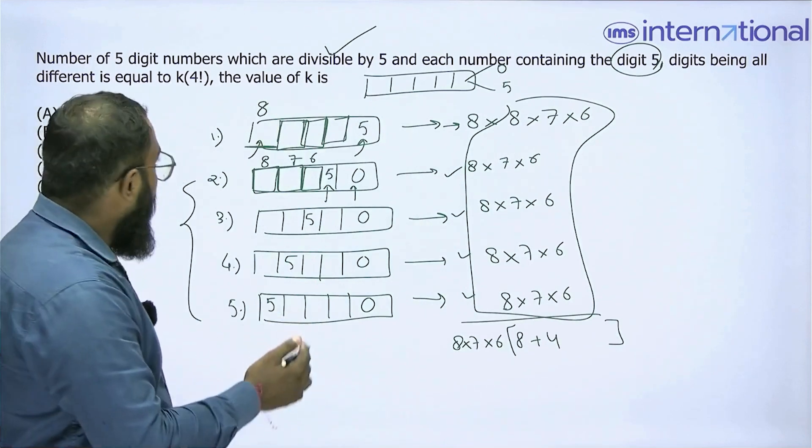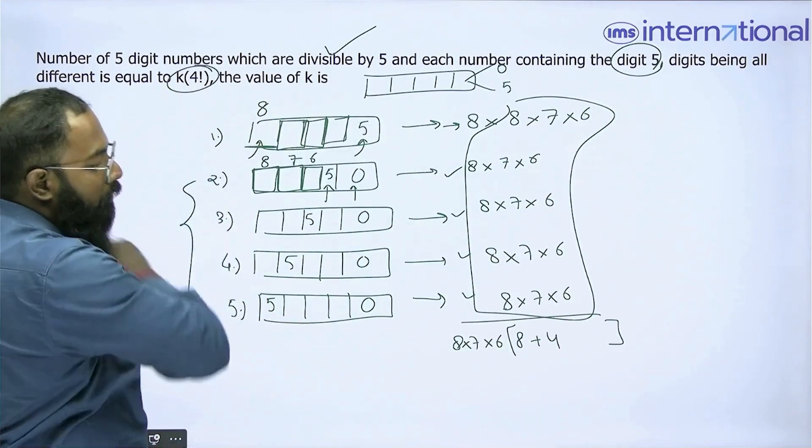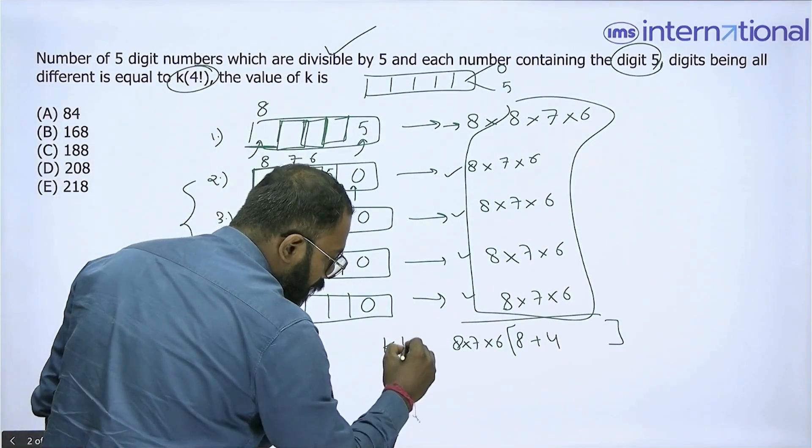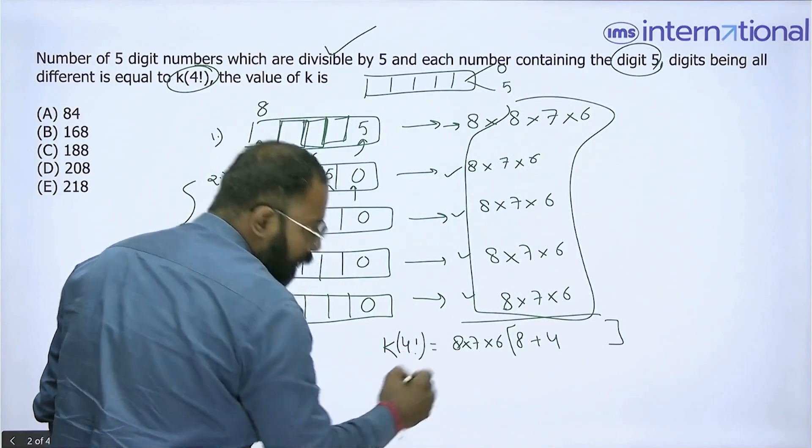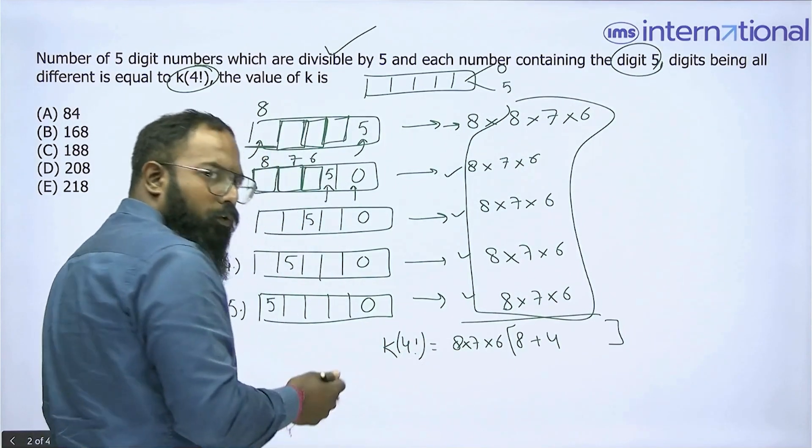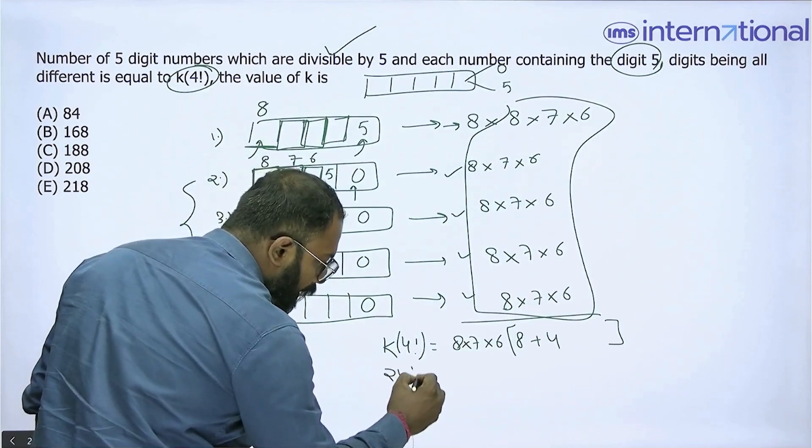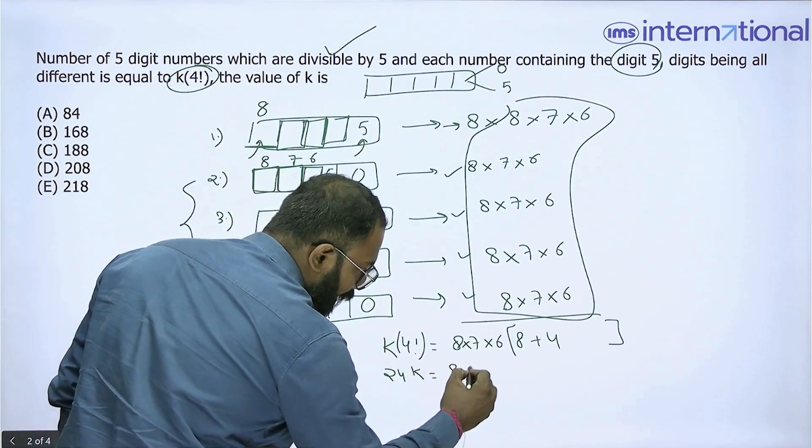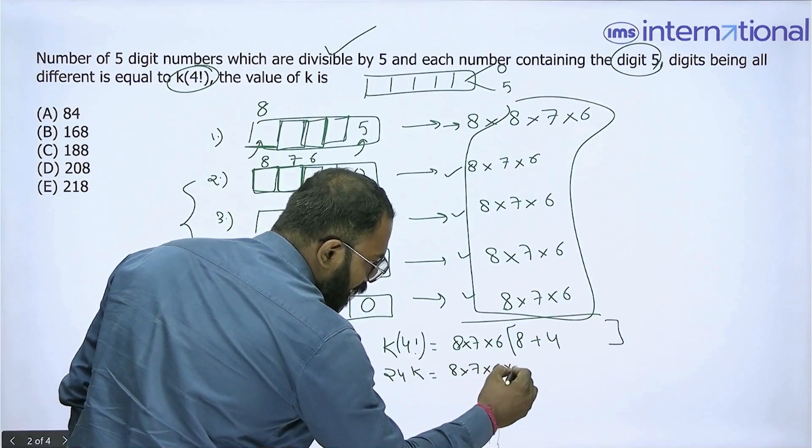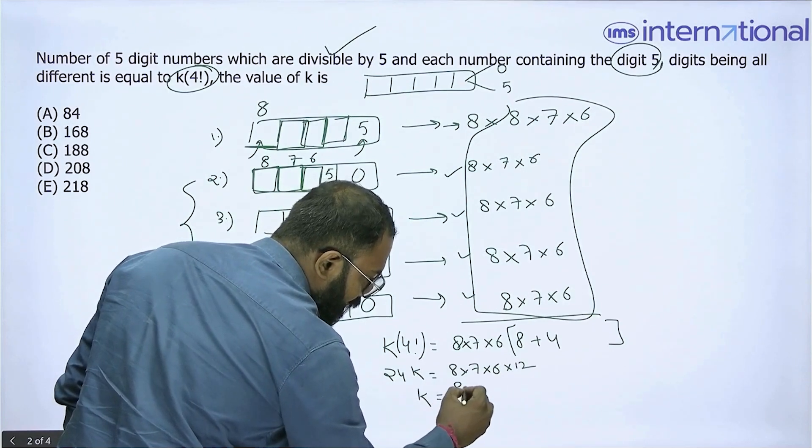This total is going to be equal to k × 4!. So 4! is 4 × 3 × 2 × 1, that is 24. So 24k is going to be 8 × 7 × 6 × 12. That means k is 168.